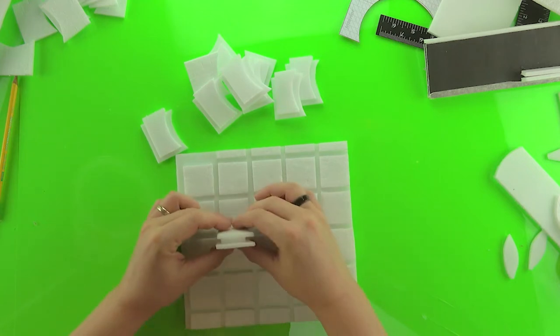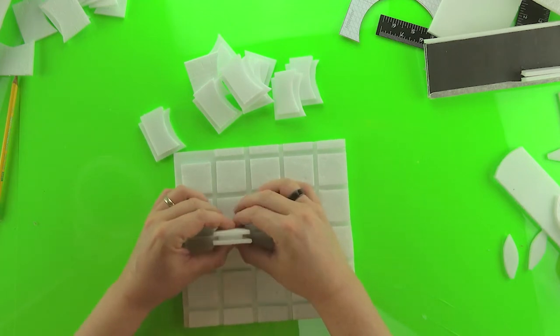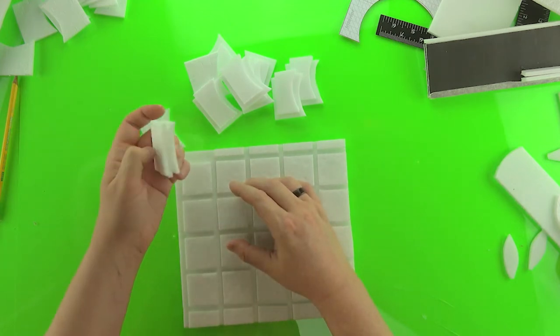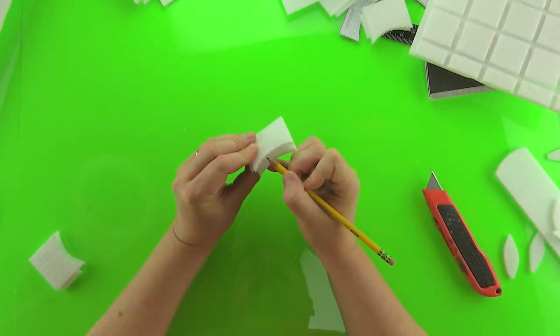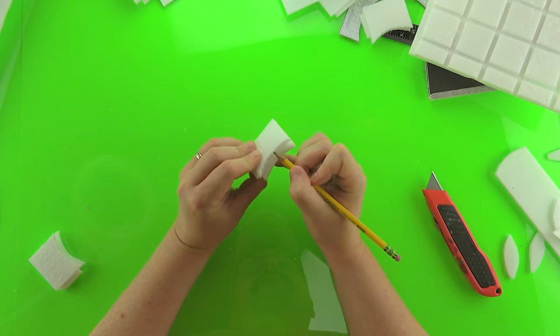If you'd like to add a little bit more detail to them, you can go ahead and actually use your pencil to continue those brick lines onto the front of the pipe piece itself. It adds a lot of nice detail. It's pretty easy to do.